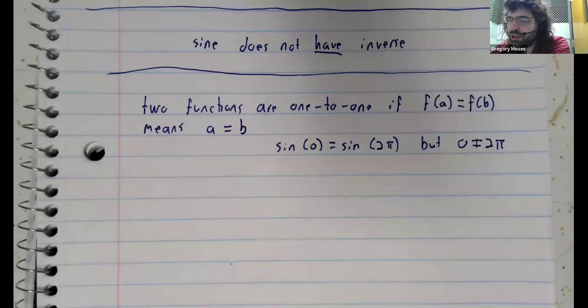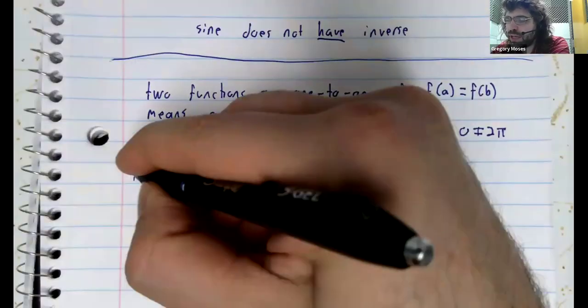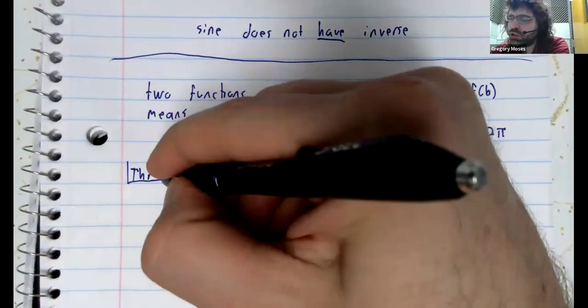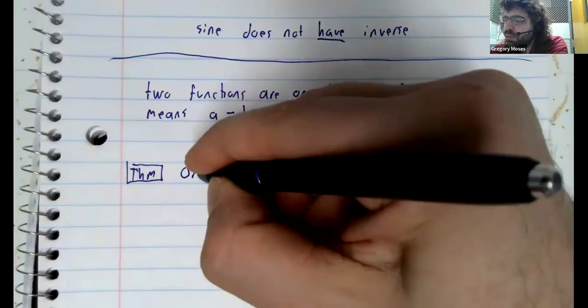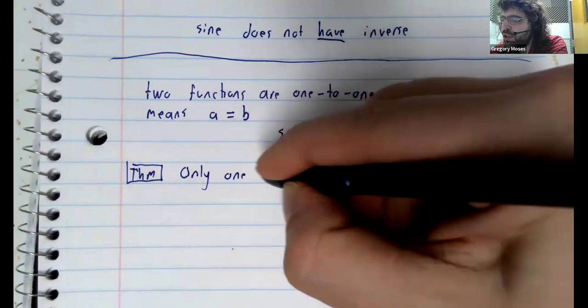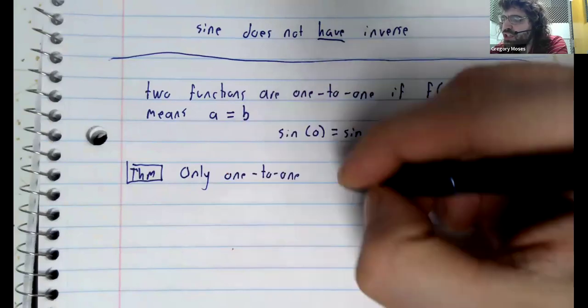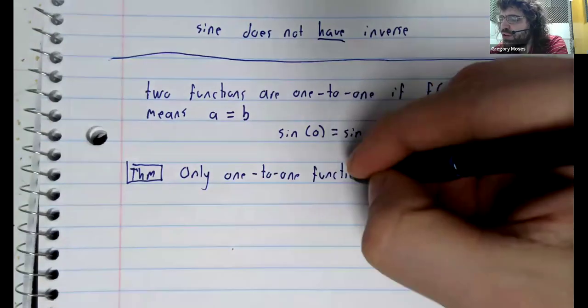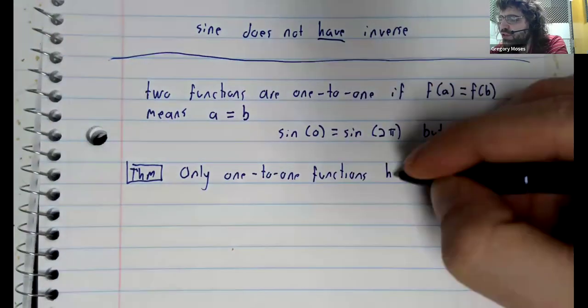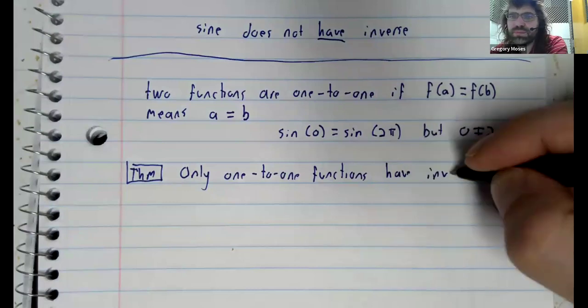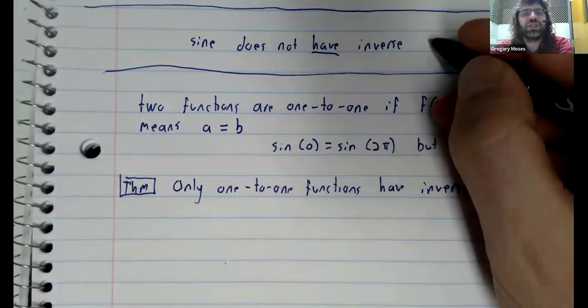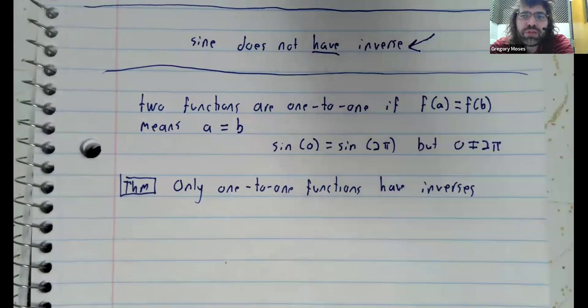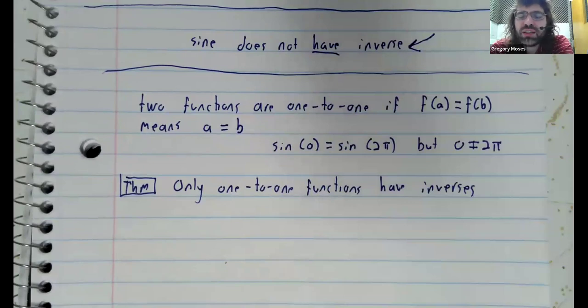And then, again, from algebra, we have a result: only one to one functions have inverses. Hence my statement that the sine doesn't. And in fact, none of the trig functions have inverses, because none of the trig functions are one to one.